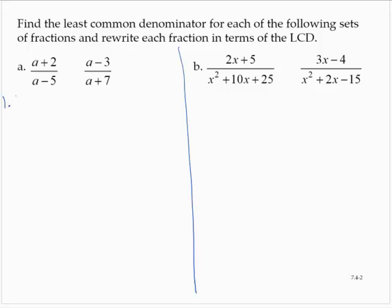First step is to factor the denominators. (a - 5) cannot be factored further, so we have a factor of (a - 5). I'll put it in parentheses to help us understand that it's a factor.